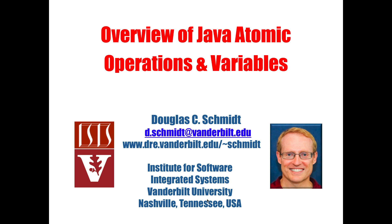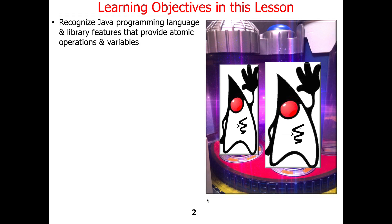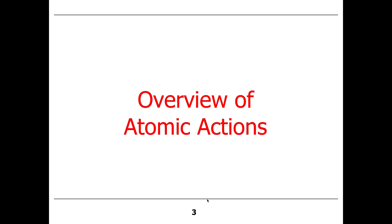The next topic I want to cover is to provide an overview of Java atomic operations and variables. This is very important because it relates to a portion of your assignment 1b code, and it has to do with spin locks and re-entrant spin locks. We're going to talk about the Java programming language features and class library features that provide atomic operations and variables.